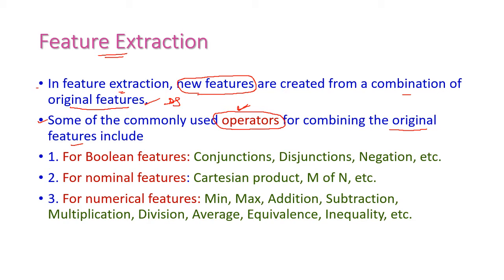Now let us see what operators we are using. The first one is Boolean features. By using Boolean operators, we can create new features. The Boolean operators we have are: conjunctions, disjunctions, and negation.